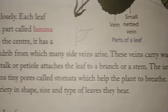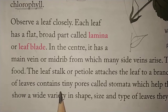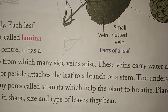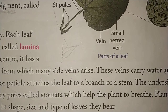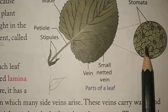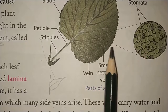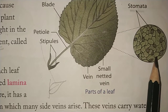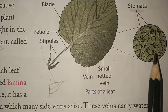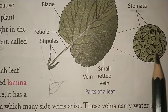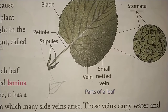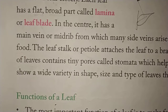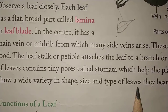The underside of the leaf contains tiny pores called stomata, which help the plant to breathe — just like we have a nose to breathe. Stomata are tiny holes on the leaf that allow gas exchange. Plants show a wide variety in shape, size and types of leaves.